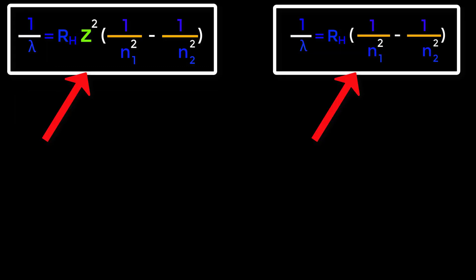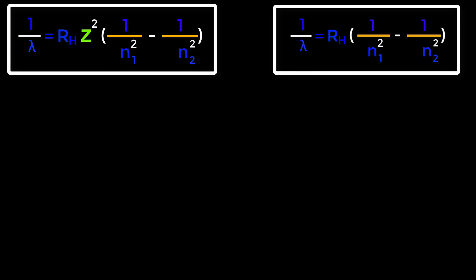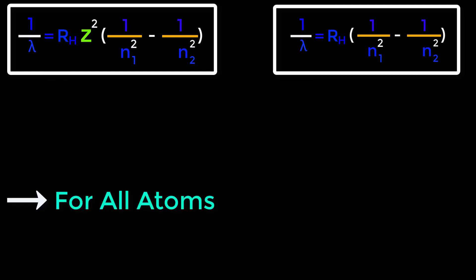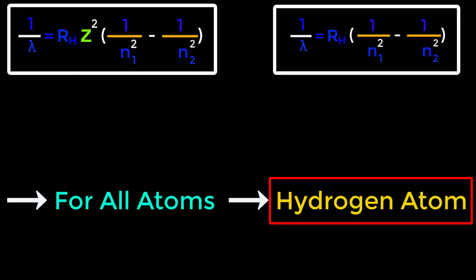Look at these two formulas. The first is: 1 over lambda equals RH times Z square times (1 over N1 square minus 1 over N2 square) — this is Rydberg's formula in full form, used to determine wavelength for all atoms. The second is: 1 over lambda equals RH times (1 over N1 square minus 1 over N2 square) — this is the short form, used only for the hydrogen atom.